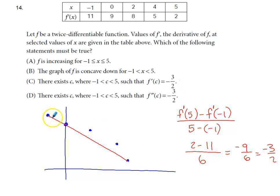What I did is I plotted these points, connected the endpoints. I'm finding the average rate of change. This is the average rate of change of f prime on the interval from negative 1 to 5. So I'm taking the f prime value at 5, subtracting the f prime value at negative 1. I'm then dividing by the corresponding difference in x's. I do get negative 3 halves. That's where that number that's in option c and option d comes from.